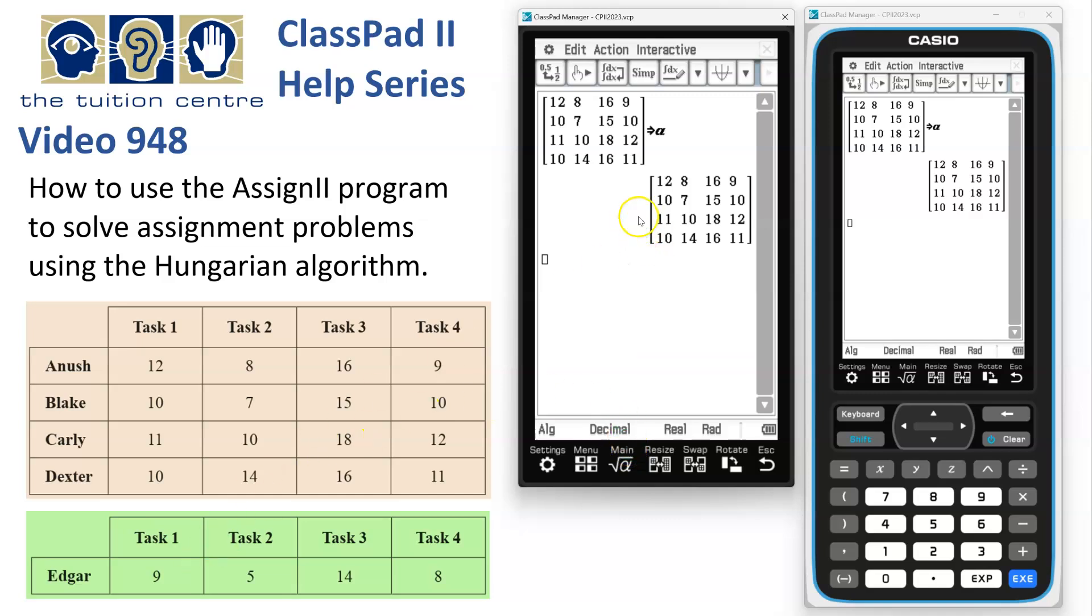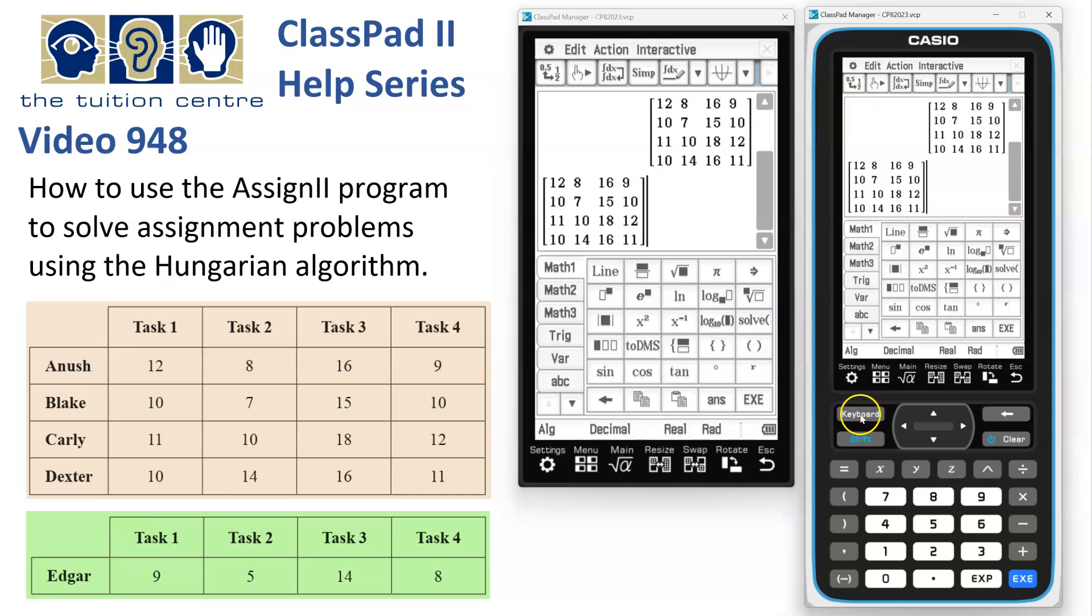Now we need to add Edgar. So we just chuck a copy of this onto a new line and we need to insert another row underneath it all. So we'll grab the keyboard, go to Math 2. So long as the cursor is anywhere inside the matrix and we tap this little column vector here, it just pops a blank row underneath.